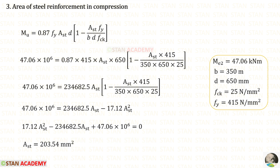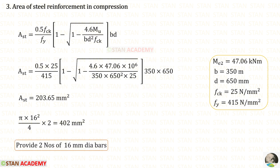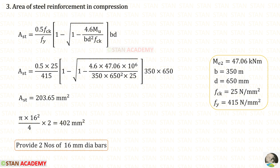Now we are going to find the area of steel in compression. For MU, we have to apply ME2. After applying all the values and solving the equation using the calculator, we get AST for compression. Alternatively, using the direct formula we also get AST. Let us use 2 numbers of 16 millimeter diameter bars, so the provided AST will be 402 millimeter square.